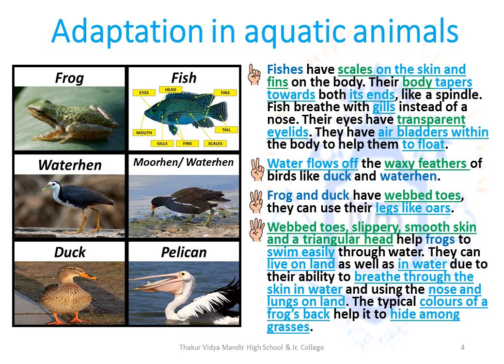The body of fishes tapers towards both its ends like a spindle — tapers means bending in a conical shape. Fishes breathe in the water with the help of gills instead of their noses, and their eyes have transparent eyelids. They have air bladders within their body which helps them to float.